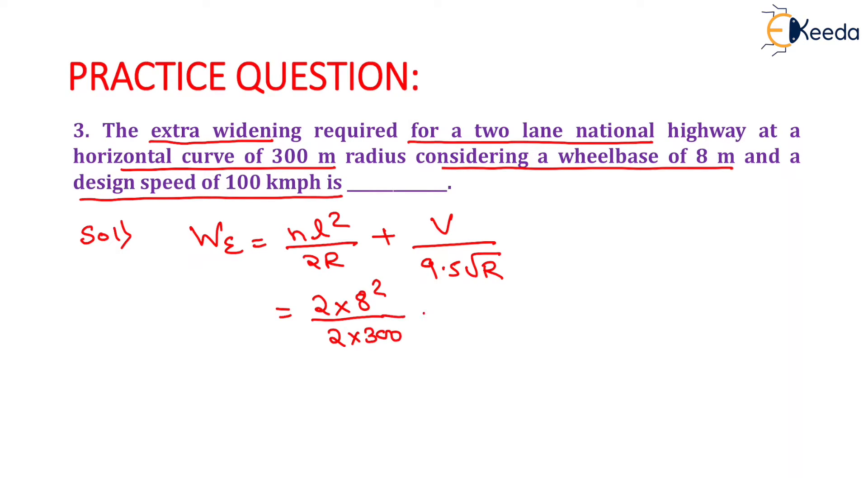So, it will be equals to 300 meter plus speed is given as 100 kilometer per hour. So, we will put it as 100 divided by 9.5 root 300.